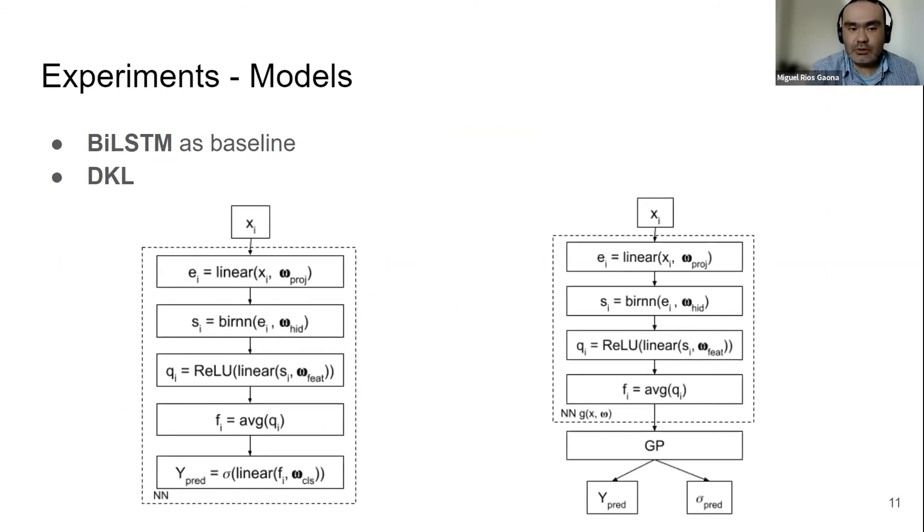So we are going to compare these two models. We are going to use a bi-LSTM baseline here on the left. As you can see, the architecture is quite similar. The difference is that in this case we are going to have a linear output prediction instead of a GP. And as you can see, now we are just going to have a prediction, a point estimate. We are not going to have an uncertainty output for the baseline.